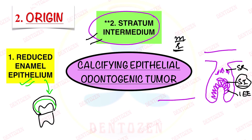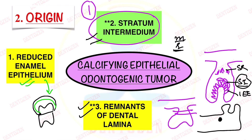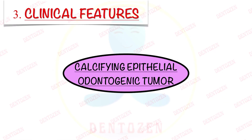Other authors also believe it can arise from the remnants of the dental lamina, because based on its anatomic distribution within the jaws, this tumor can be seen in areas where remnants of dental lamina are found. So the two important origins are: most importantly stratum intermedium, and secondly remnants of dental lamina.